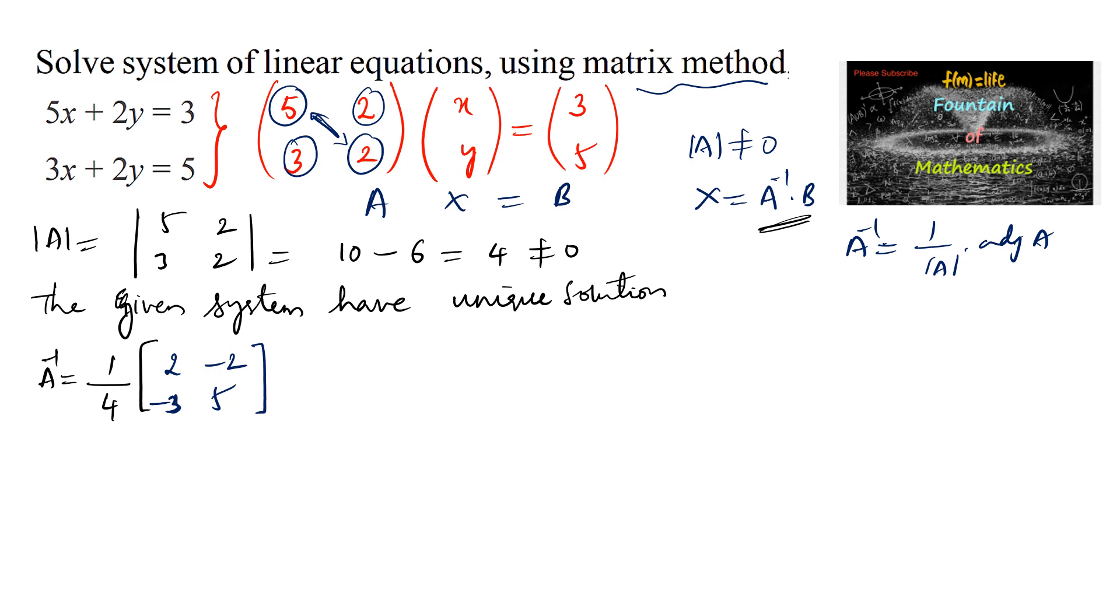Now X equals A inverse into B, that is 1 by 4 times the matrix 2, negative 2, negative 3, and 5 multiplied with the constant matrix 3 and 5. Row with column: 1 by 4 times, first row with first column, 2 into 3 is 6 and negative 2 into 5 is negative 10. And negative 3 into 3 is negative 9 plus 5 into 5 is 25, which equals 1 upon 4 times 6 minus 10 is negative 4 and 25 minus 9 is 16.